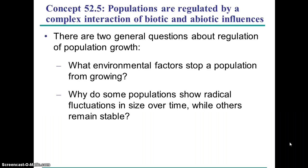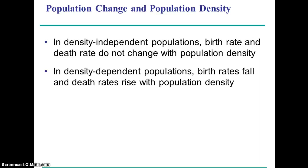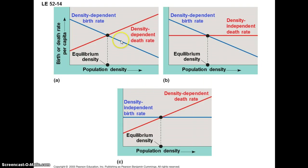Populations can be regulated by various factors — density independent factors and density dependent factors. We can look at situations where birth rate is dependent on density, such that when you have a smaller population you have higher birth rates, and also where death rates are density dependent, so smaller populations have lower death rates and larger populations have higher death rates and lower birth rates. There'll usually be some equilibrium population density that's a function of those two.